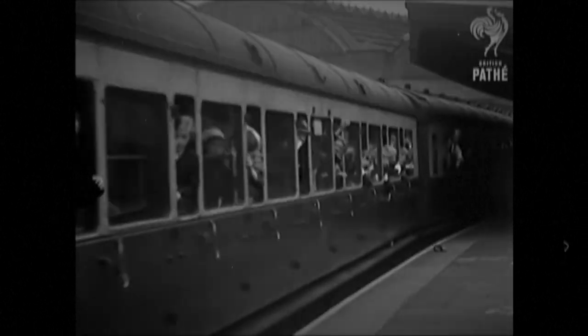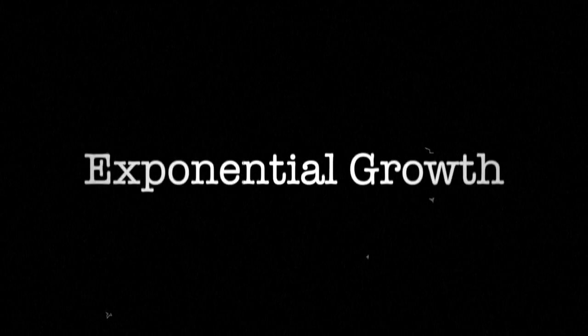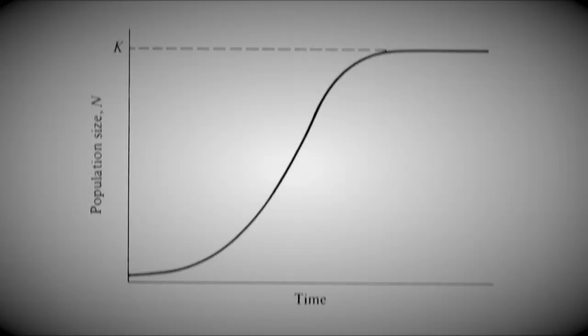Species grow at different speeds. So how do we categorize the speed that these populations increase and decrease at? One categorized speed is exponential growth. Exponential growth is the increase of a population that grows more and more rapidly. This occurs when the needed resources of the population become unlimited. Another speed is logistic growth. In contrast to exponential growth, logistic growth is the decrease of a population.